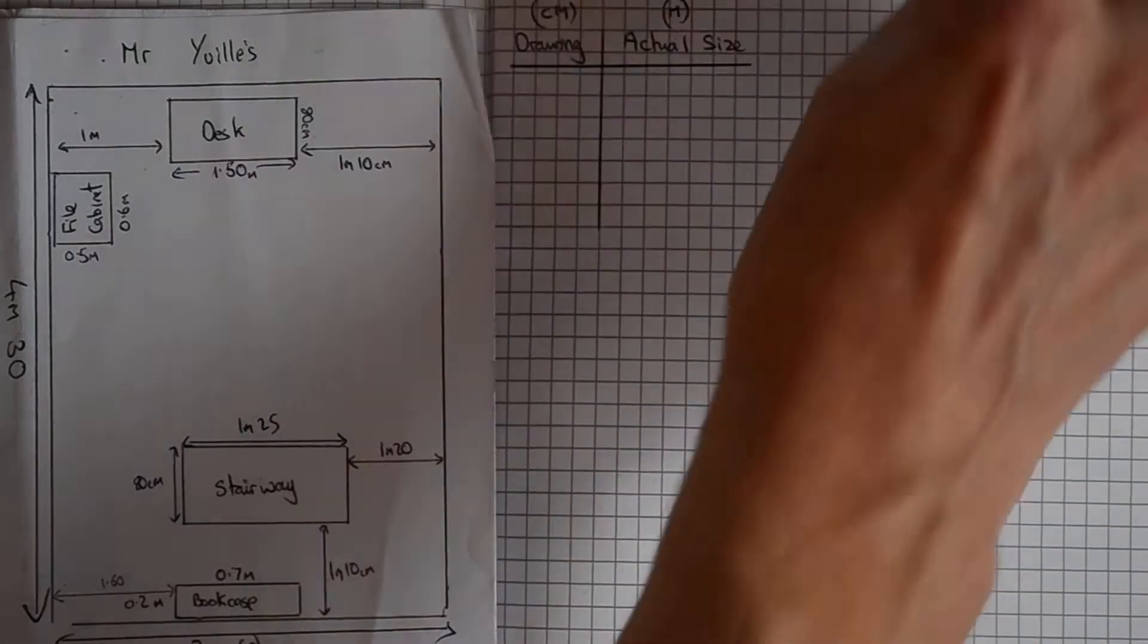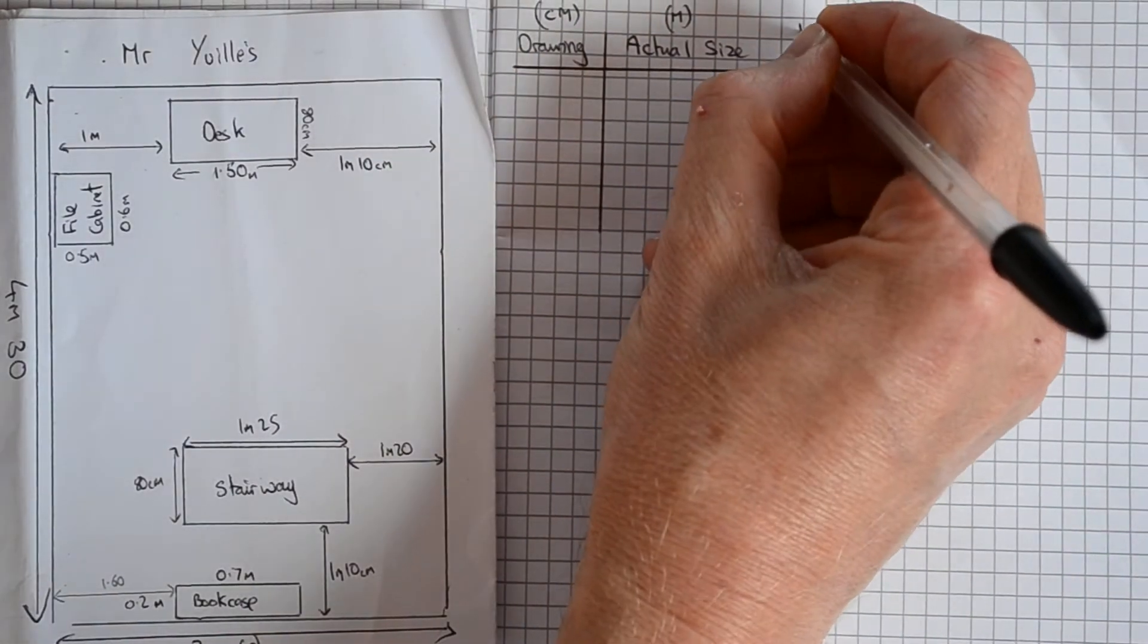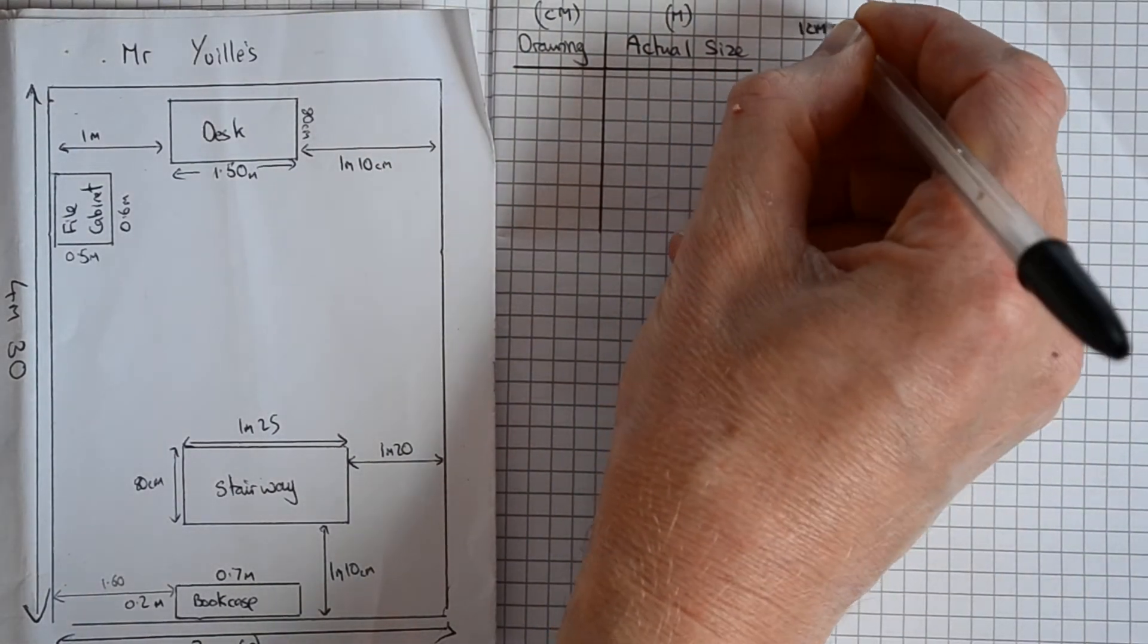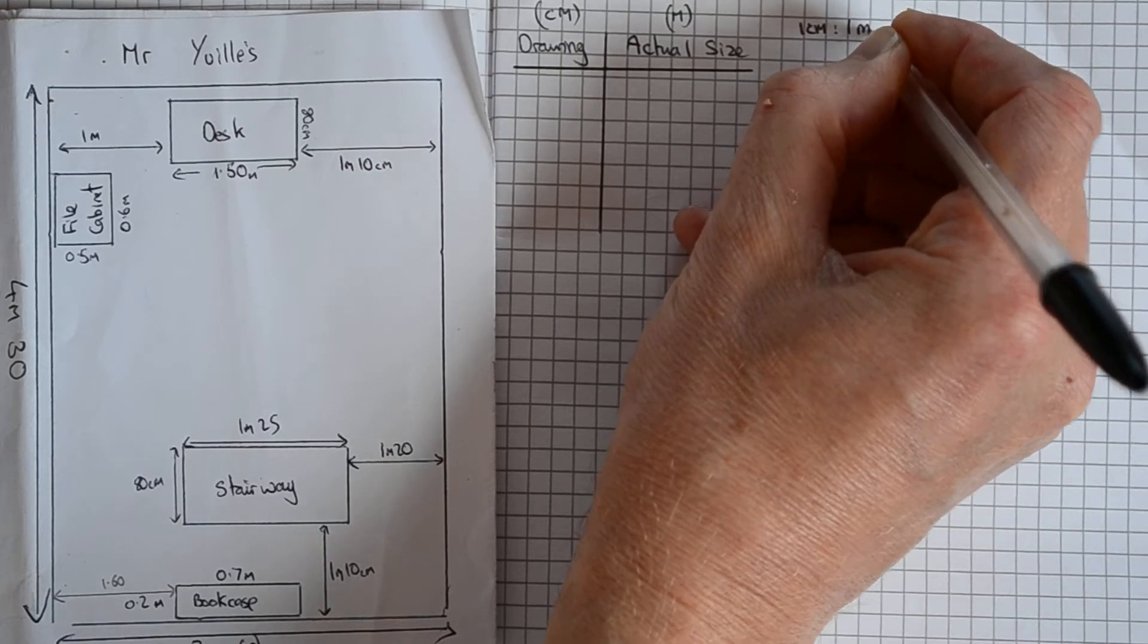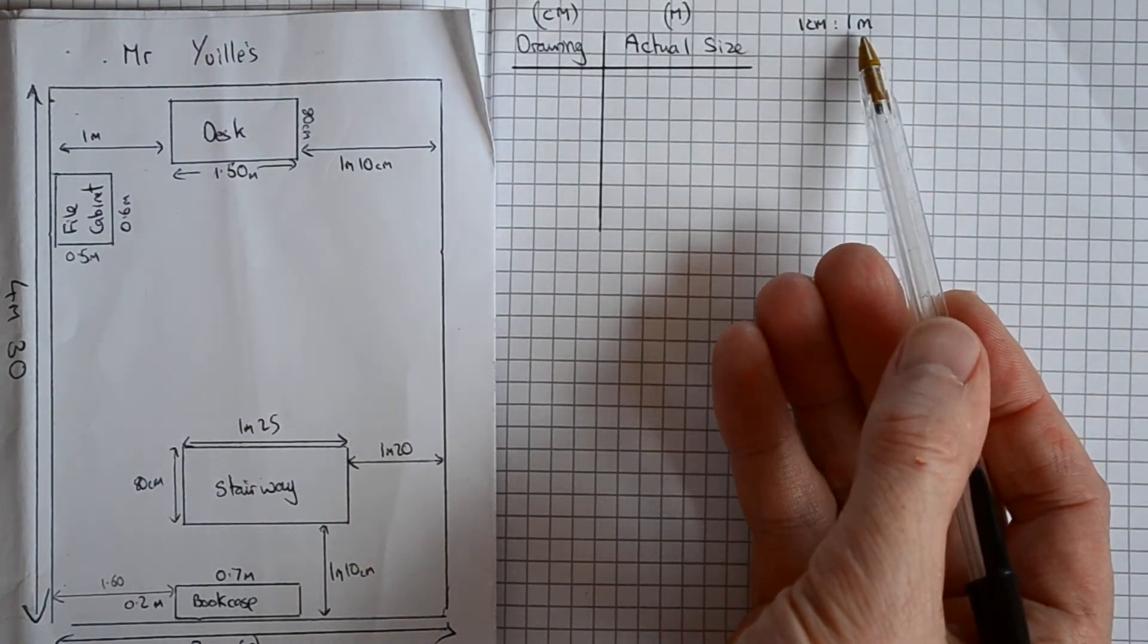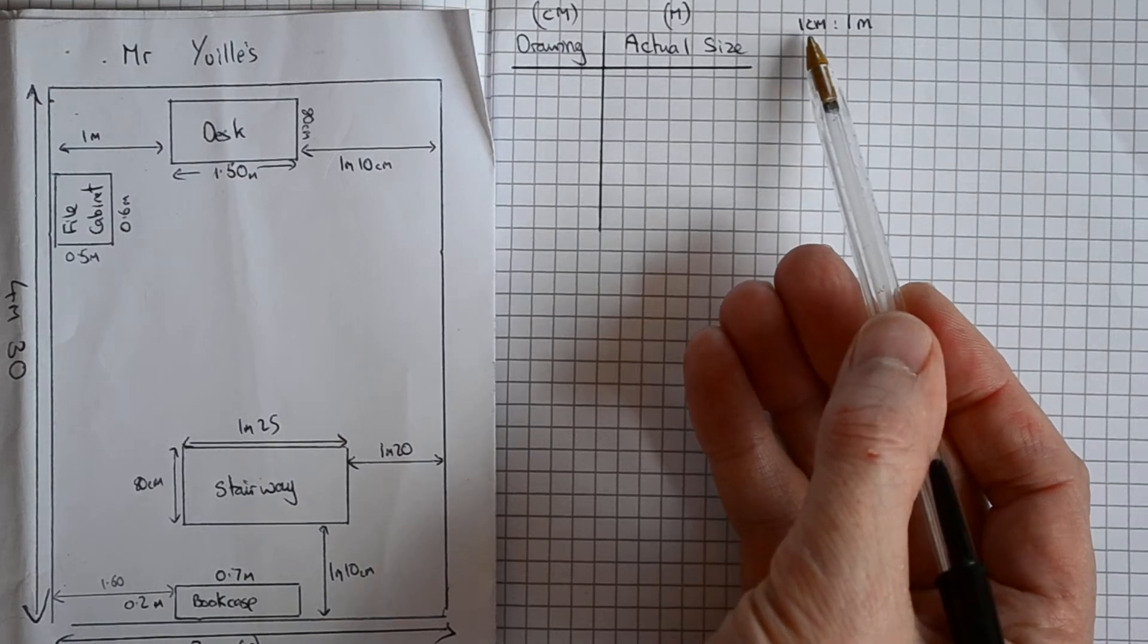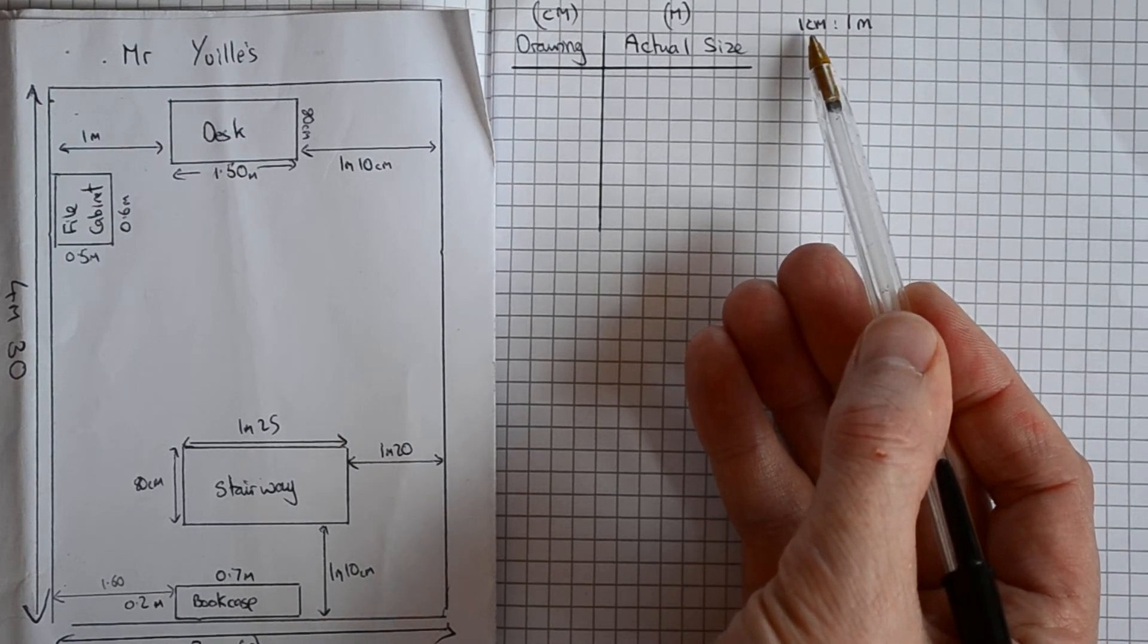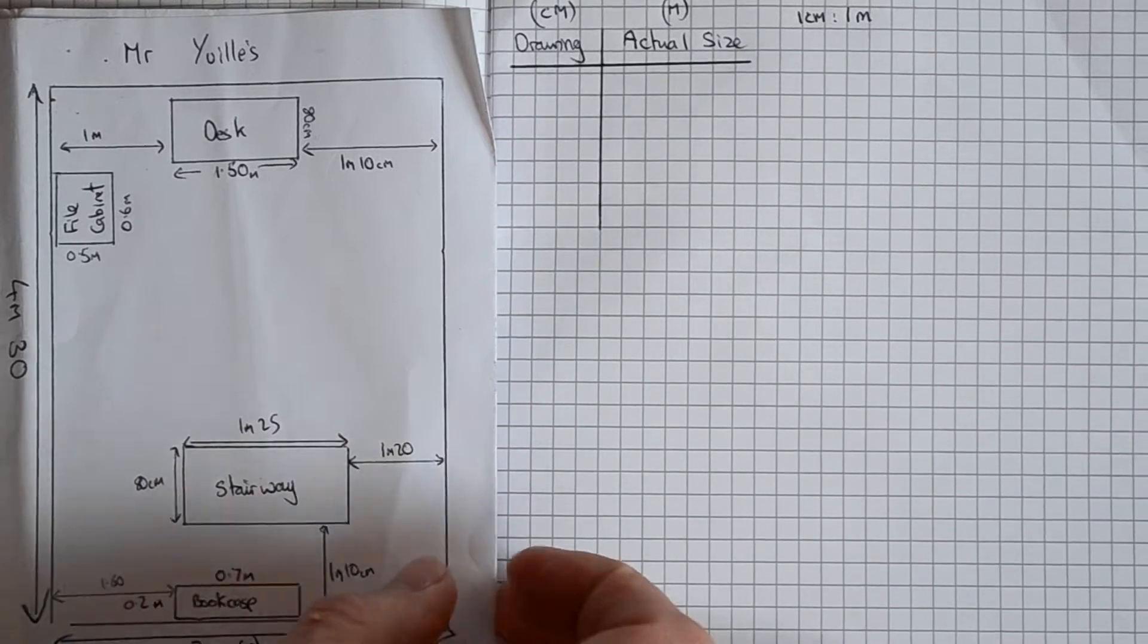So what I'm doing is I'm using a scale of one centimeter to one meter, so that means that for every meter in real life, on my diagram it's represented by one centimeter.